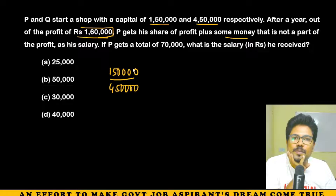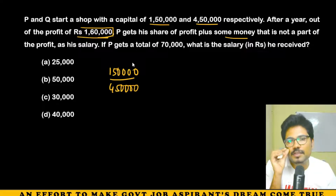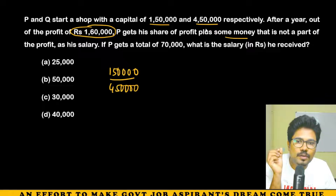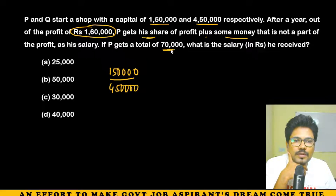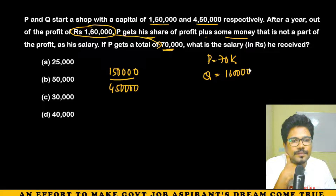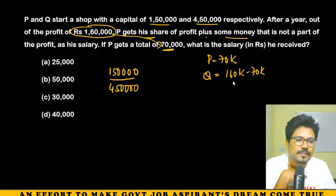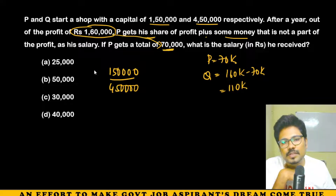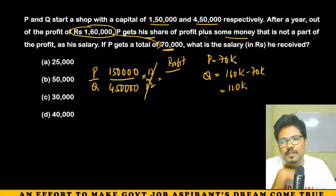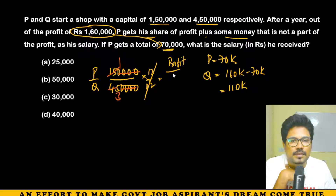P gets a share of profit plus a salary that is separate from the profit. The investment ratio of P to Q is 1,50,000 : 4,50,000, which simplifies to 1 : 3. Both partners invested for 12 months, so time cancels. The profit ratio is 1 : 3, meaning 4 total units equal 1,60,000.